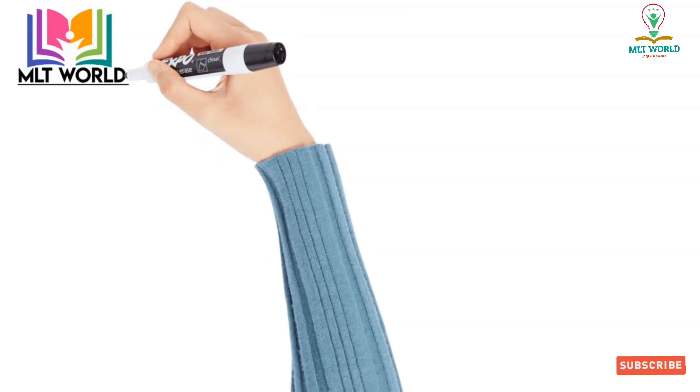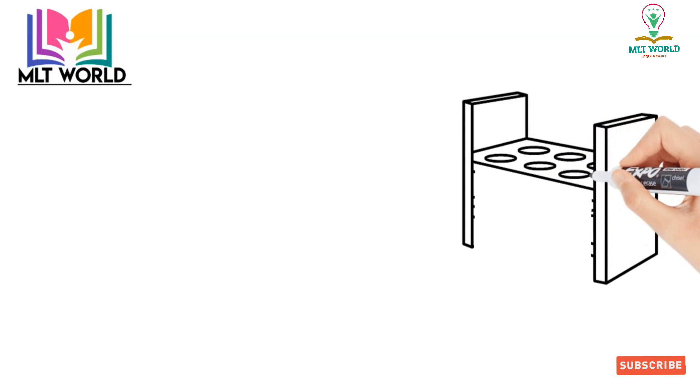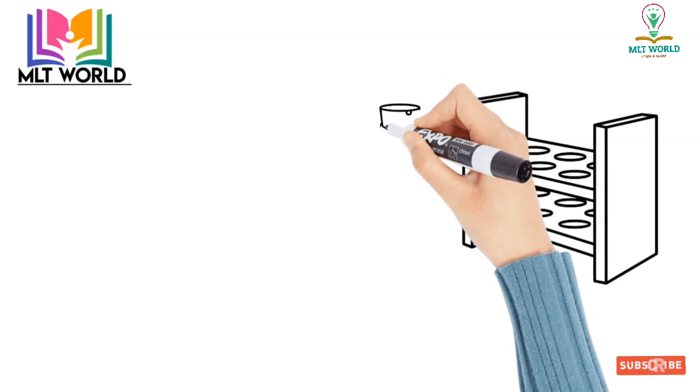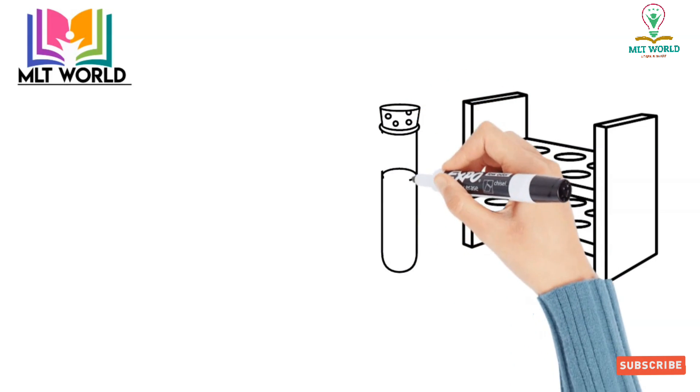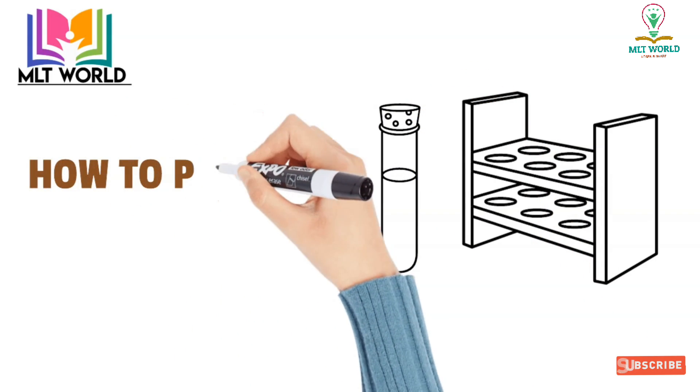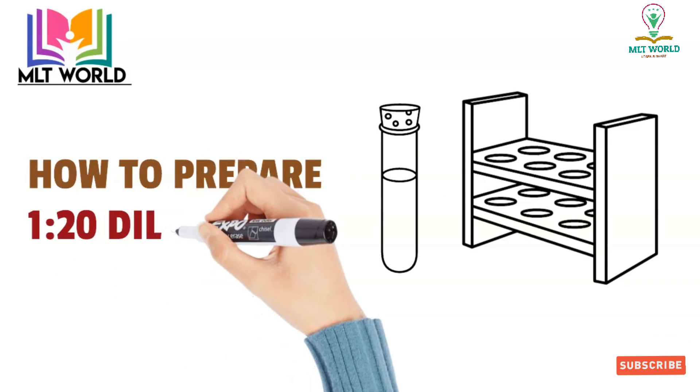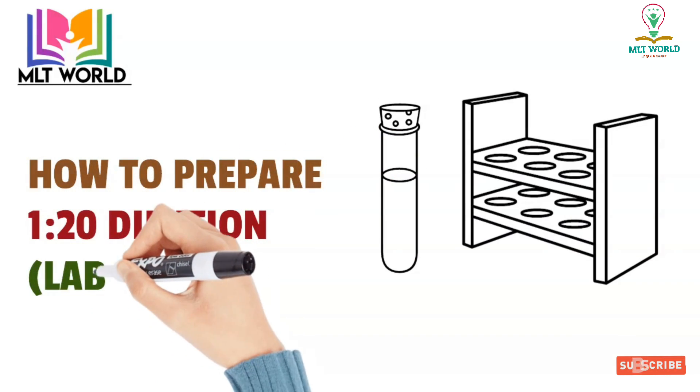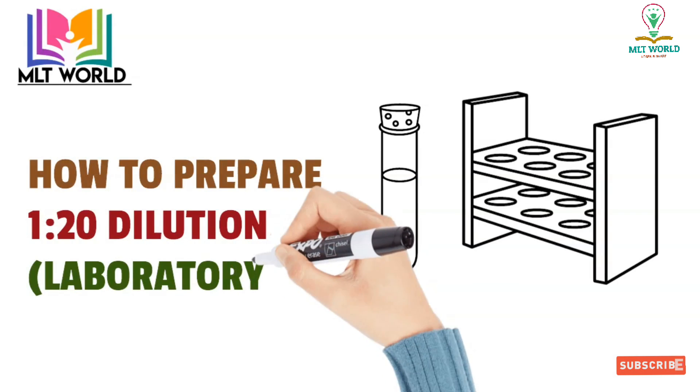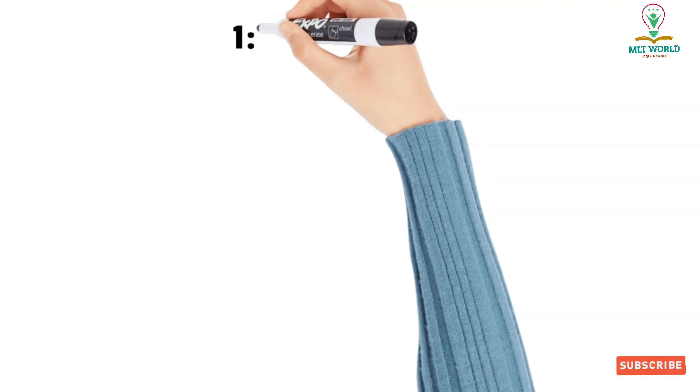Welcome back to MLT World. Today, I will share how to make a dilution, and one of the most common dilutions we use in our routine is 1:20 dilution for WBC making dilution, sperm count dilution, or if any value is coming very high and you have to decrease the sample quantity.